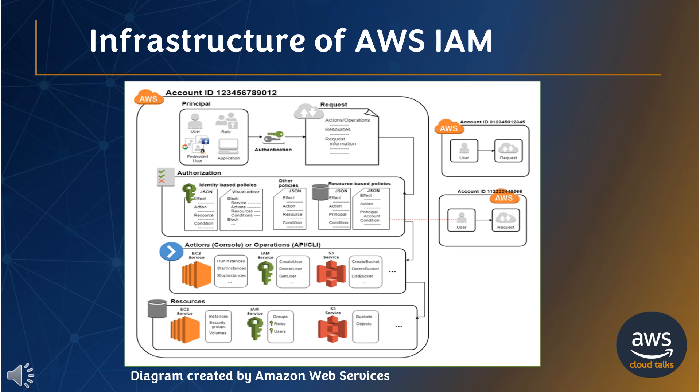The diagram created by Amazon Web Services illustrates the infrastructure of AWS IAM. First, a human user or an application uses their sign-in credentials to authenticate with AWS. Next, a request is made to grant the principal access to resources. Access is granted in response to an authorization request. Once authorized, the principal can take actions or perform operations on resources in your AWS account.